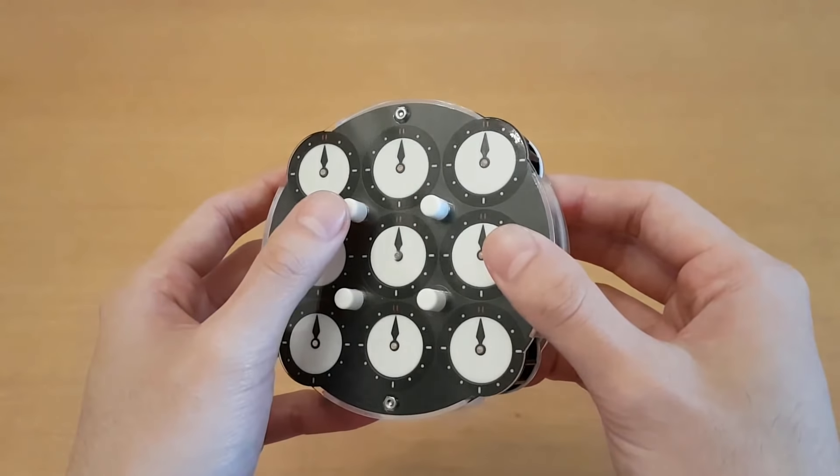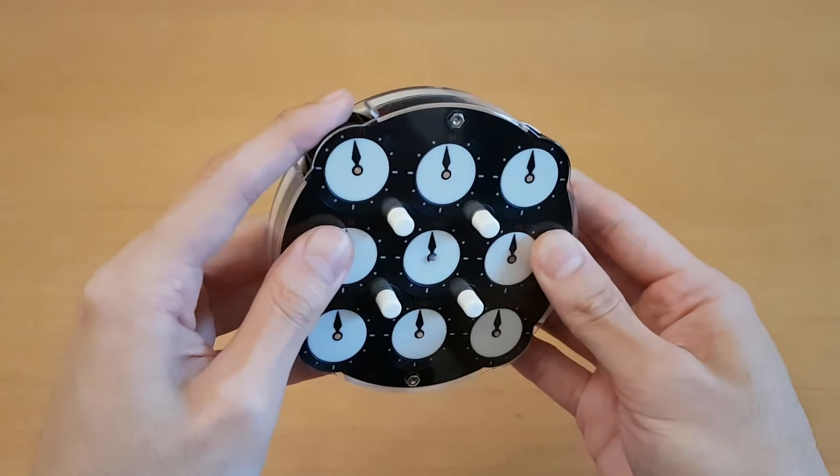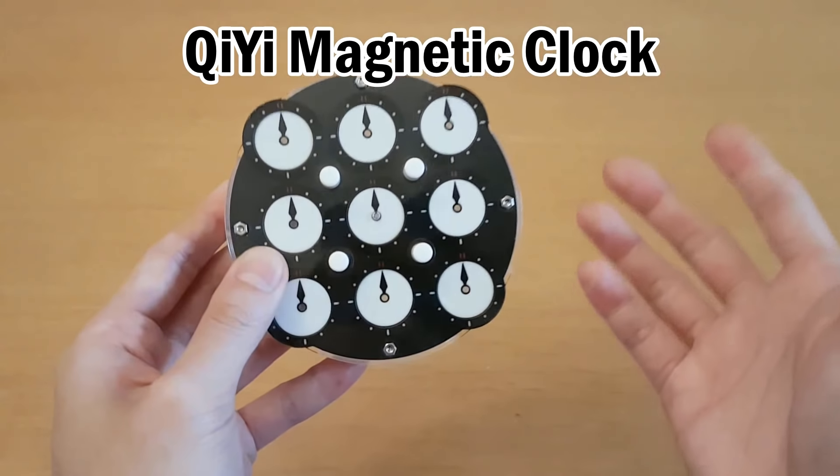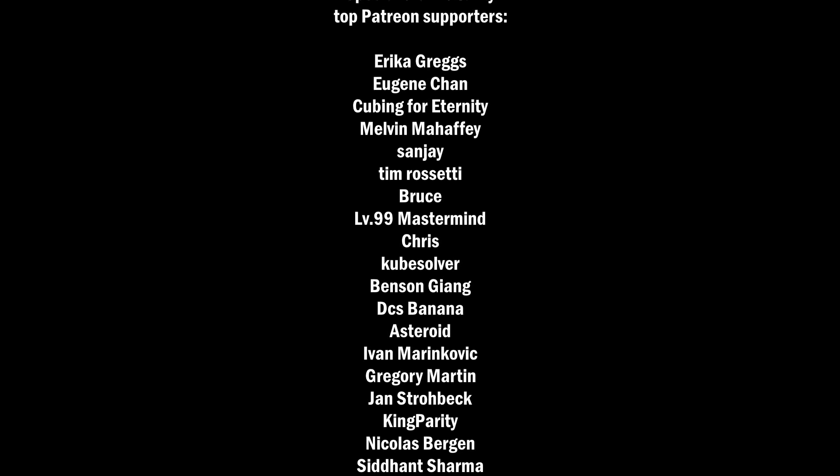As it helps with control over the pins and with the dials. This is called the Qi magnetic clock, and you can find it at Speedcube Shop, linked in the description below. And you can get it for cheaper if you use the discount code JPERM.